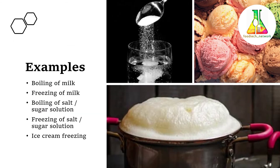Now, if we look at colligative property examples in normal life, different things we can see at home like boiling of milk, freezing of milk, boiling of salt or sugar solution, freezing of salt or sugar solution, or ice cream freezing — all these things depend on colligative properties. For example, suppose you have a 100 ml flask with 50 ml of normal water and another with 50 ml of milk. Water boils more quickly compared to milk.